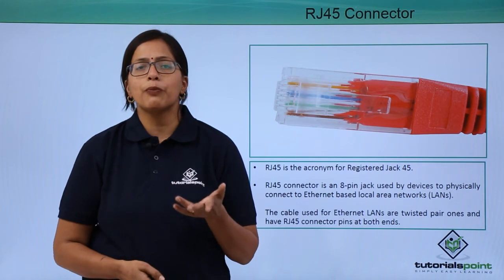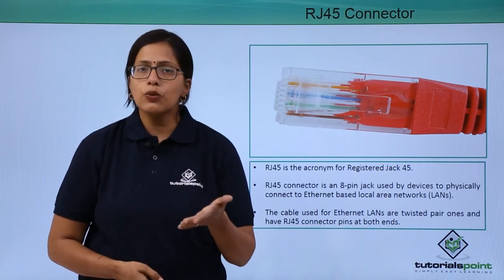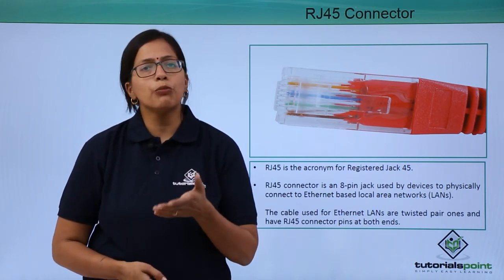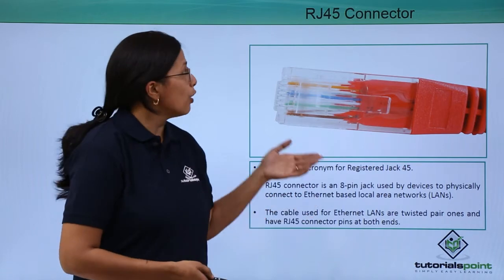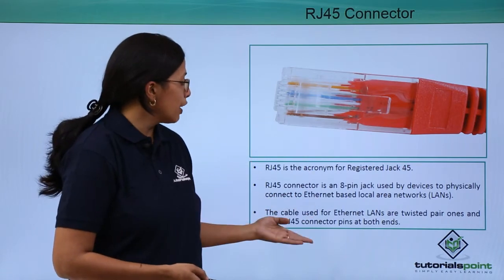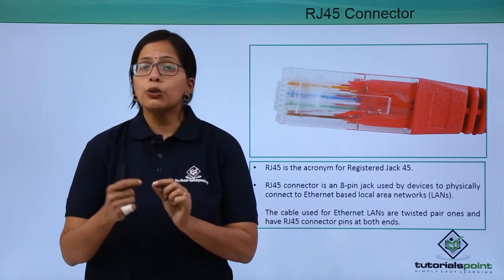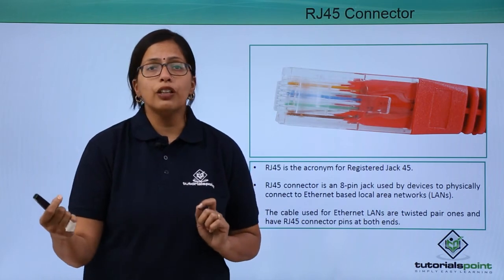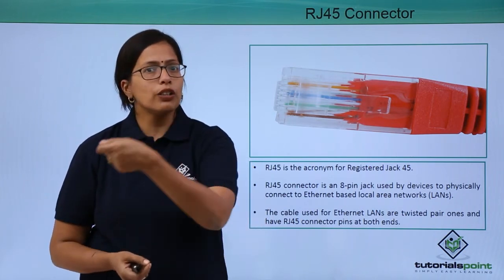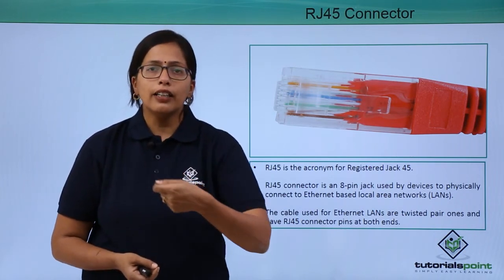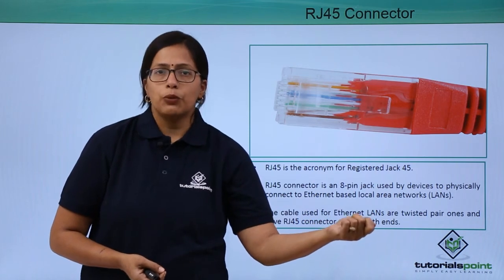As we have discussed in our previous videos, twisted pair copper cables are still the most popular form. The RJ45 connector is used to connect the two ends of the wire, where one end goes into the Ethernet card and the other end goes into the network.